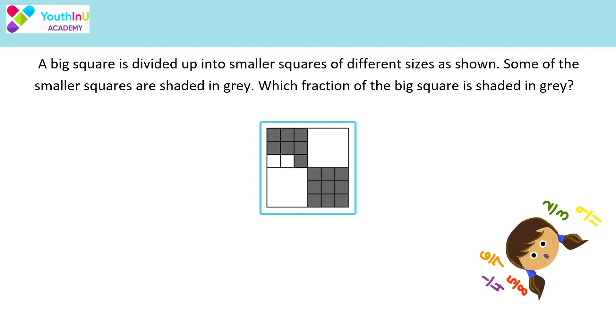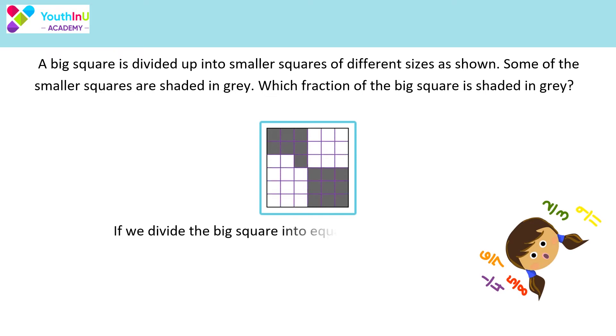Now let's see the answer. If we divide the big square into equal parts, we get 36 boxes, out of which 16 are grey.